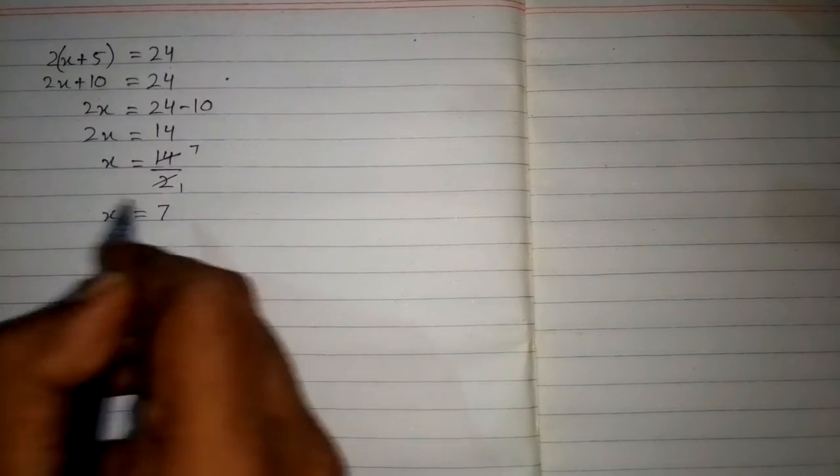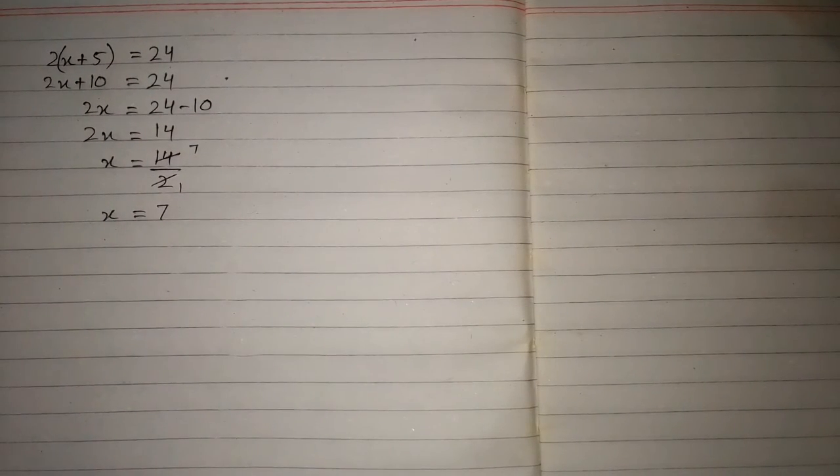Now 2 sevens are 14, so the value of x is 7 and this is the solution of the given equation.